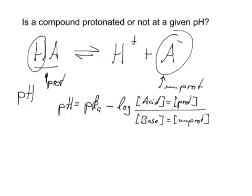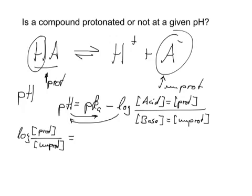And I abbreviate it like that. So we can rearrange this equation, and we can say, we bring this to this side, we bring this to that side, and we have log of the protonated form divided by the unprotonated form equals pKa minus pH. And that's fairly easy then to solve.